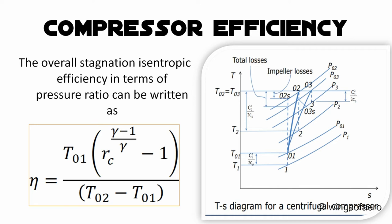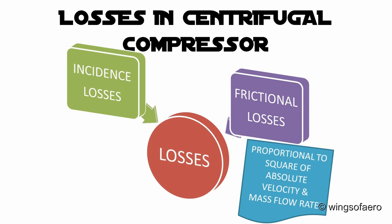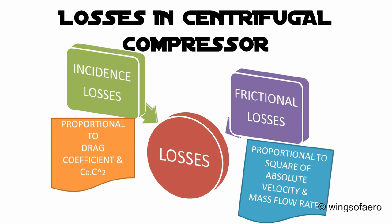The losses in centrifugal compressors: The total losses may be divided into two groups — frictional loss and incidence loss. Frictional loss is proportional to C² and hence to ṁ². Incidence loss is proportional to the drag coefficient Cd, or proportional to Cd·C².